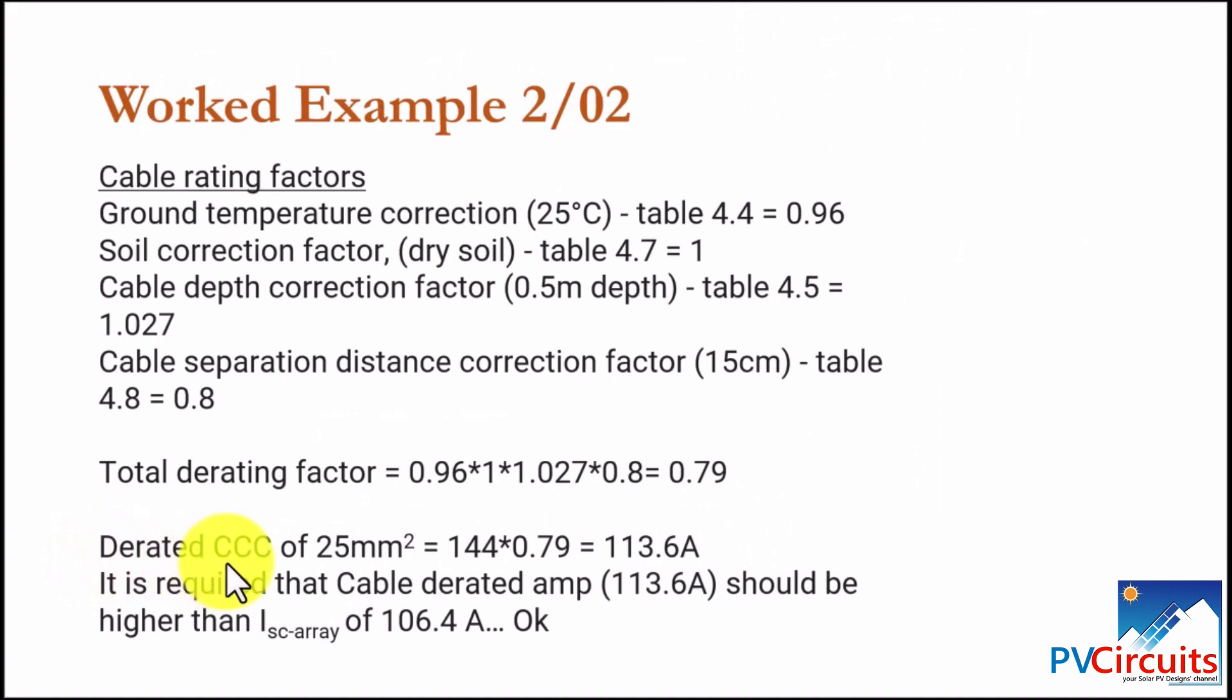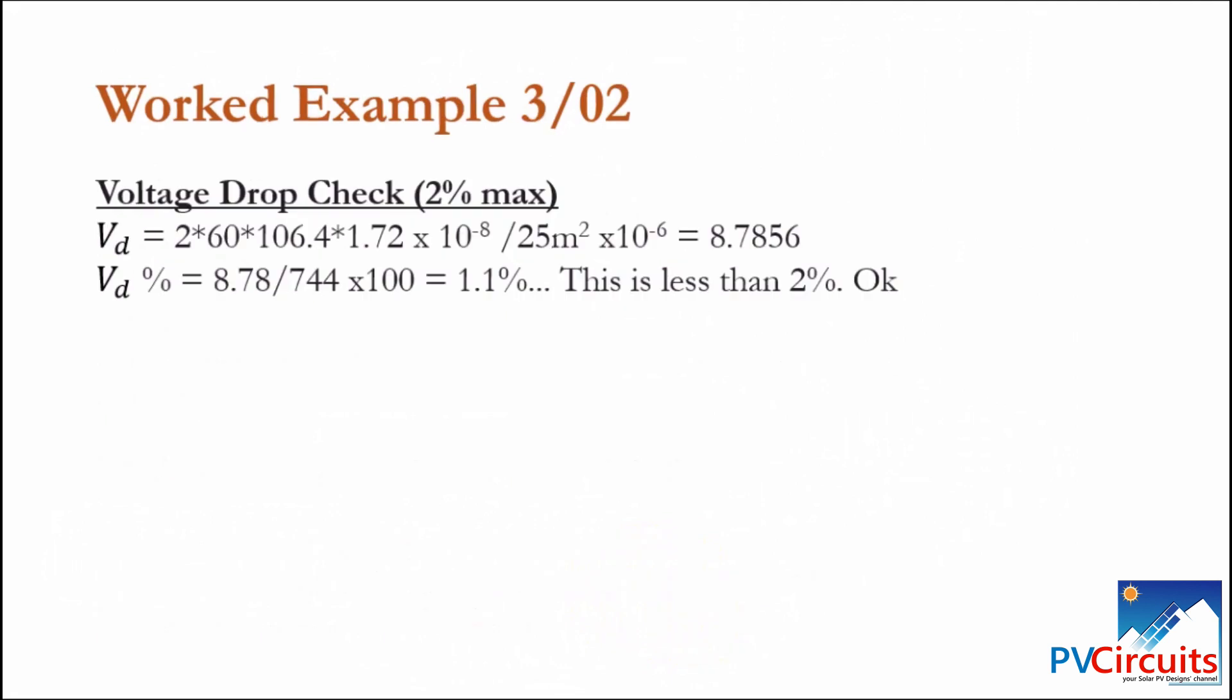So, the derated current carrying capacity of 25 mm square cable is what we saw in the table for the cable, which was 144. Now, we derate it by 0.79, and that gives us 113.6 amps. It is required that the cable derated carrying capacity should be higher than the current which is passing from the array to the inverter. If we check, we see that the current coming from the inverter is 106.4, and our cable has a capacity to carry 113.6. So, our cable can carry more than the required 106.4 amps.